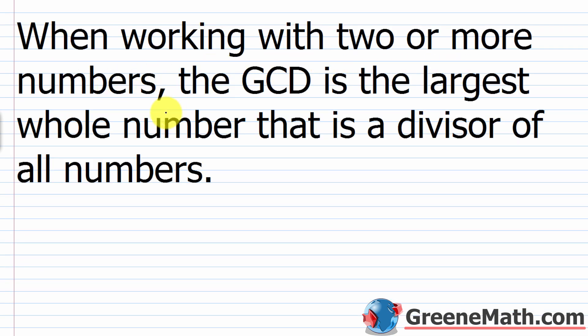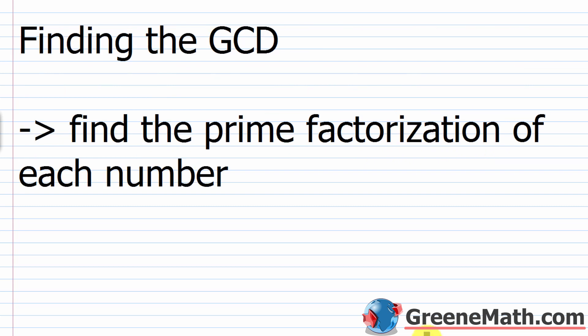When working with two or more numbers, the greatest common divisor — GCD — is the largest whole number that is a divisor of all numbers. I could have just as easily said the GCF, the greatest common factor, is the largest whole number that is a factor of all numbers. We can interchange those. Finding the GCD is very simple — go ahead and write down the steps and then use them as we practice.